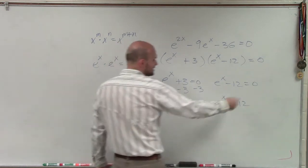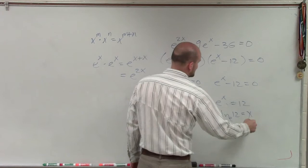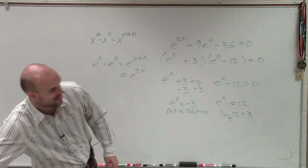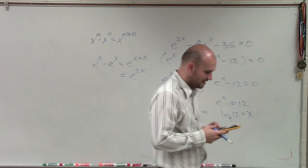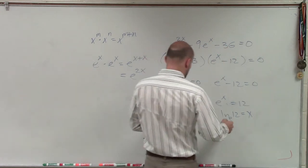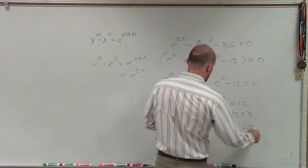However, to solve this, we can just rewrite this in logarithmic form. ln of 12 equals x. So now I just need to take the natural logarithm of 12. So I do ln of 12, and that's going to be 2.48. So x is approximately 2.48.